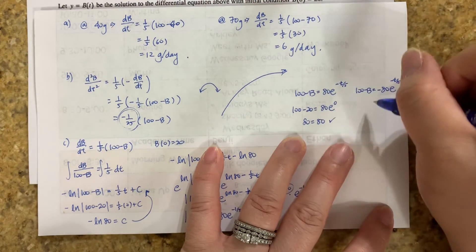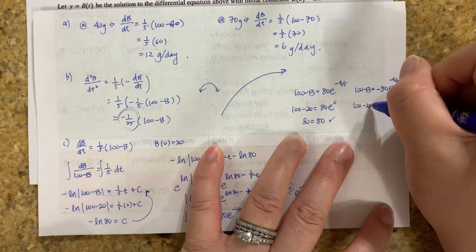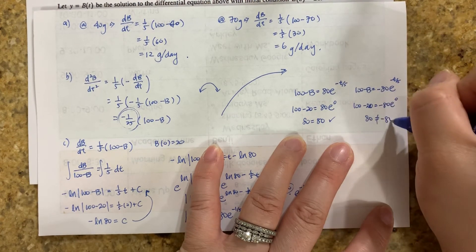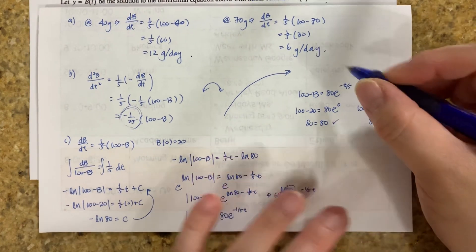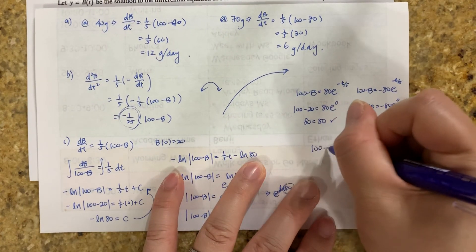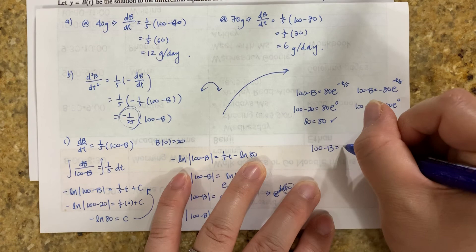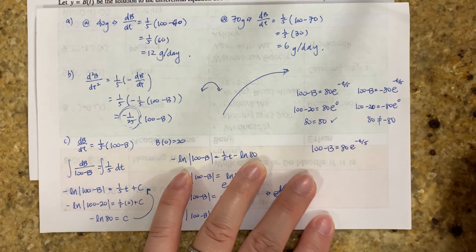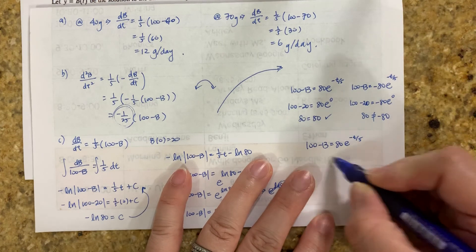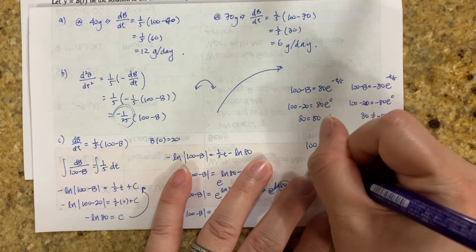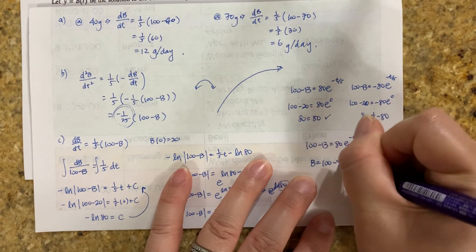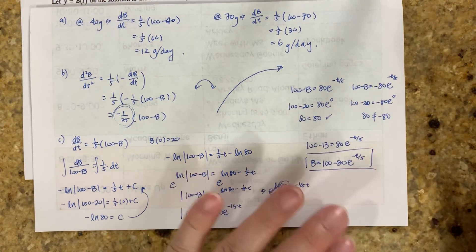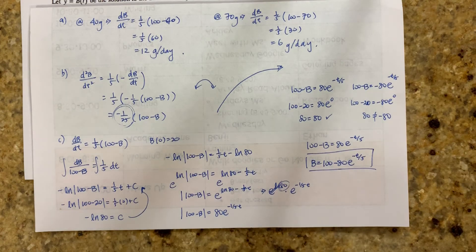How about this? 100 minus 20 equals negative 80 e to the 0. So 80 does not equal negative 80. So nope. Not this one. So my final answer is 100 minus b equals 80 e to the negative t over 5. You're really trying to solve for b. So add the b over, subtract the 80. So b equals 100 minus 80 e to negative t over 5 will be your final answer. That's it. Thank you.